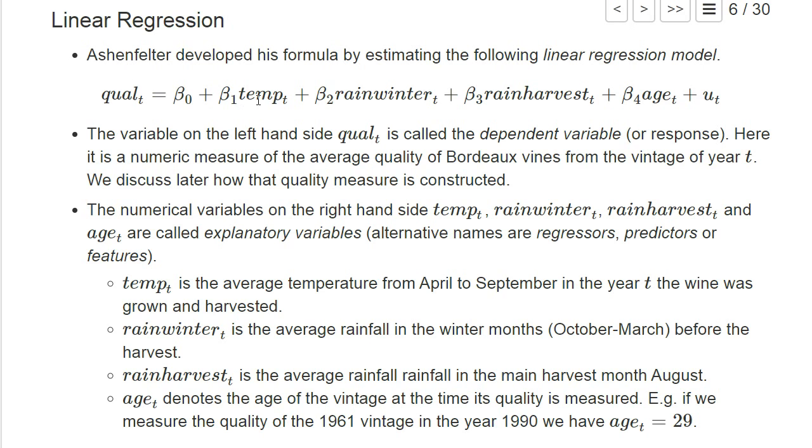He has different explanatory variables on the right-hand side, which are all numerical variables, so they have numbers for a particular vintage t. We have the temperature, the average temperature from April to September in the year t where the wine was grown.